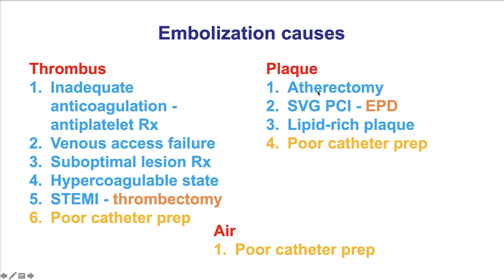Moving on to plaque, the two classic examples of plaque embolization are in the setting of atherectomy and saphenous vein graft interventions. Saphenous vein grafts have friable morphology and are more likely to embolize, which is why an embolic protection device should be used whenever feasible. Plaque embolization can also occur in patients with lipid-rich plaque, as shown in the following example, and also when plaque is ingested into the catheter during advancement through the aorta in patients with significant aortic disease. Sometimes it is not just thrombus or plaque but a mixed picture — for example, a lipid-rich plaque that embolizes and also forms the nidus for additional thrombus formation.